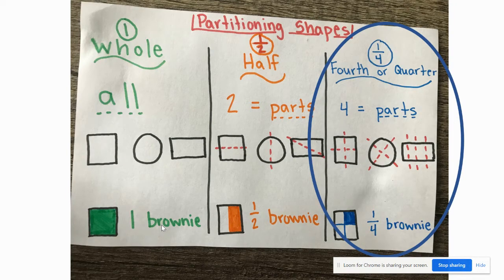On the bottom, we see we have a quarter of a brownie shaded in. That one blue square is one of four squares that that brownie was broken up into. It is one fourth of a whole or one quarter of the whole.